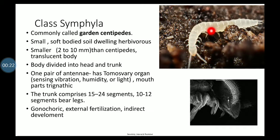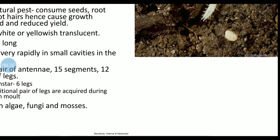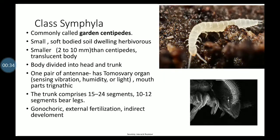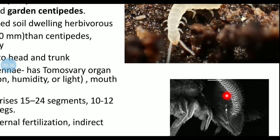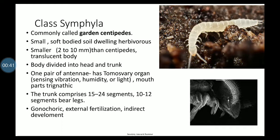They are smaller than centipedes. The body is divided into head and trunk. The head has antennae, which is called a sensory organ known as the Tomosvary organ. This Tomosvary organ is a sensory organ used to detect light, sensation, vibration, and humidity.